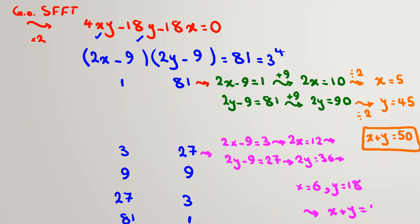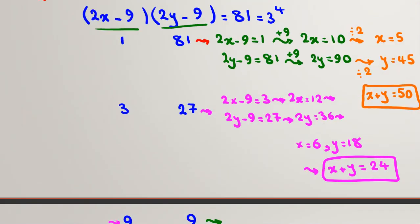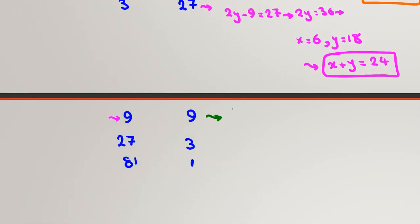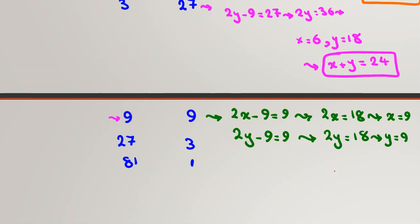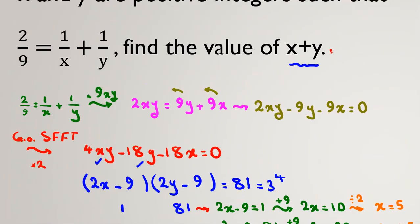Let's check the third case, 9. If we check here, 2x - 9 = 9 and 2y - 9 = 9. If we add both sides by 9, 2x will be 18 and 2y also will be 18. If we check, x + y: 18, 24, and 50. We found three answers for x + y.